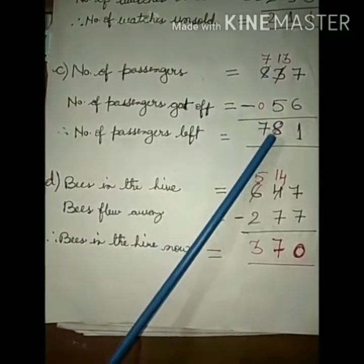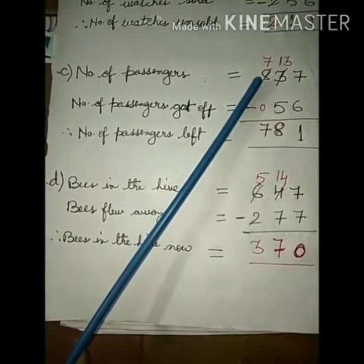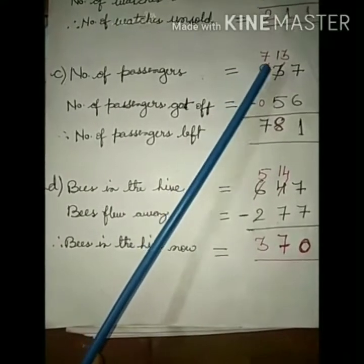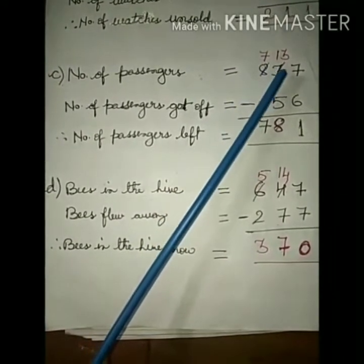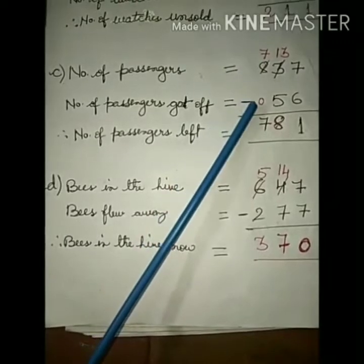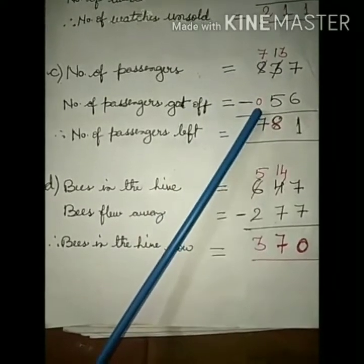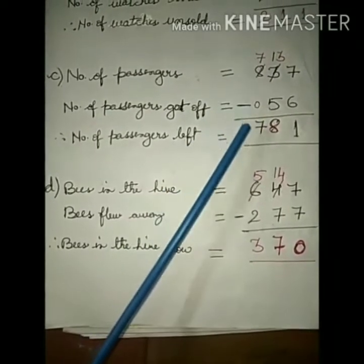13 minus 5 is equal to 8. And here it becomes 7 because it's given 1 to tens place, that is 3. So 7 minus, there is nothing to subtract, so this 7 will directly come to this place. So 781.